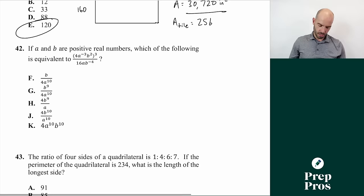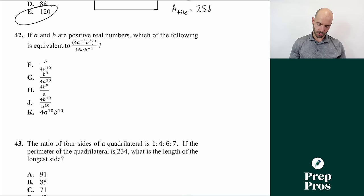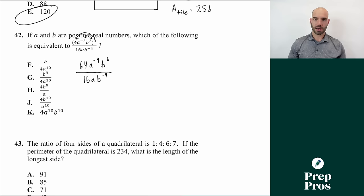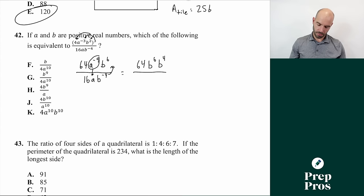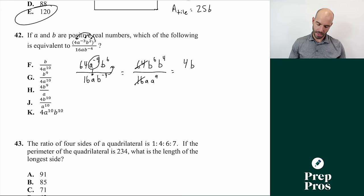Number forty-two: simplify the exponents expression. Distribute the exponent 3 to the first factor: 4 cubed equals 64, giving 64 times A to the -9 times B to the 6, all over 16 times A times B to the -4. Move negative exponents: A to the -9 goes to the denominator as A to the 9th, and B to the -4 on the denominator moves to the numerator as B to the 4th. Result: 64 times B to the 6th times B to the 4th over 16 times A times A to the 9th. Simplify: 64/16 equals 4, B to the 10th over A to the 10th. The answer is J.